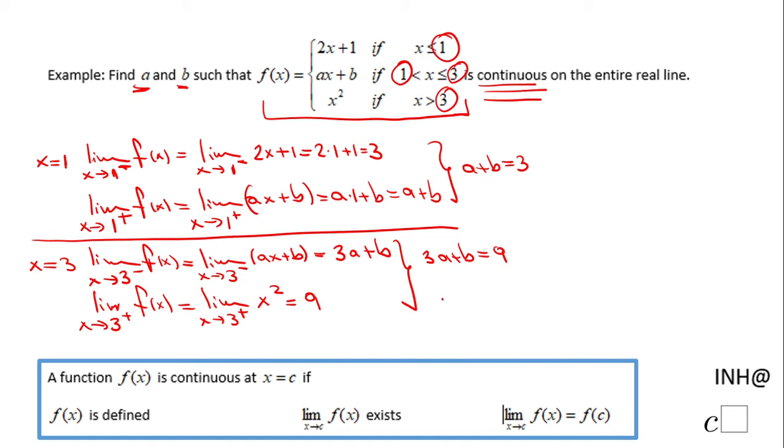Now we have a system of equations here: 3a plus b equals 9, and a plus b equals 3. I will subtract them, and I have 2a equals 6, which gives me a equals 3.